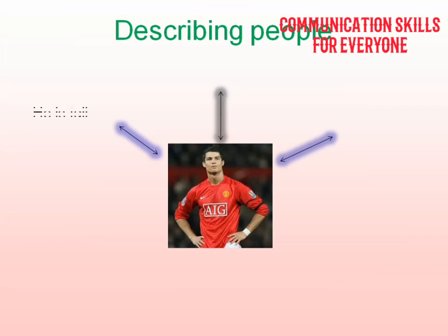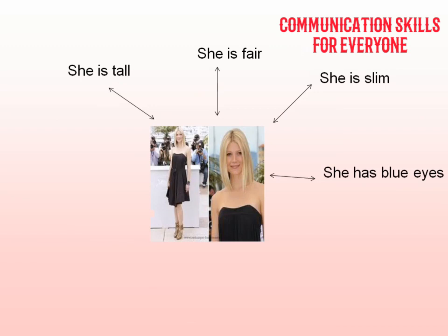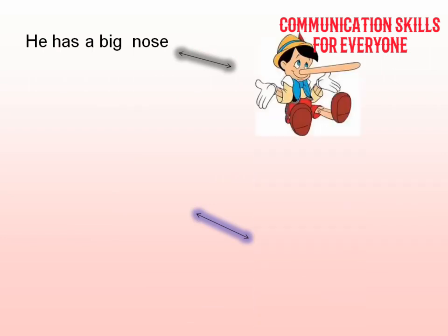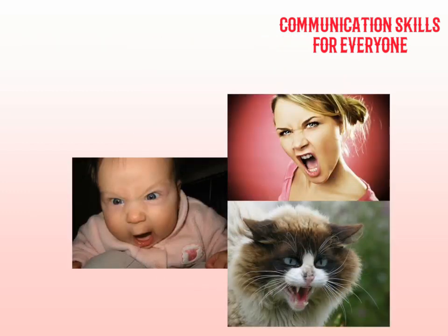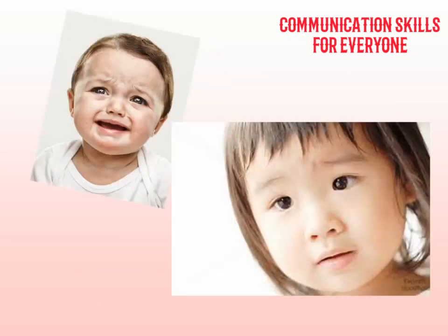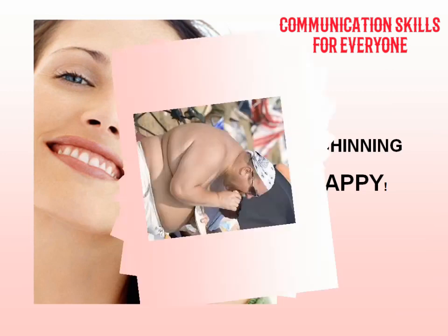So how do you describe someone? For example: he has black hair, his hair is short; she's tall, slim, she has blue eyes; he has a big nose, he has a big mouth. You can also talk about feelings — how they look or feel: happy, sad, or angry.